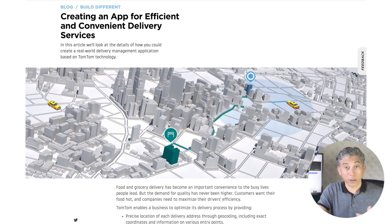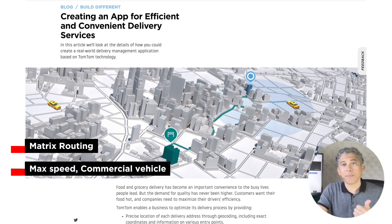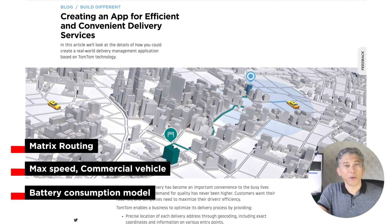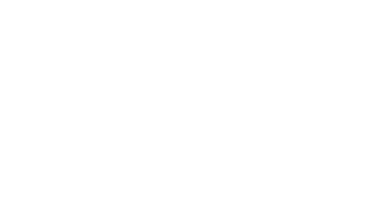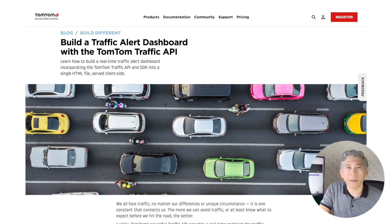Even with all these restrictions, the TomTom Maps APIs can help you. Let's look at this article in our developer portal to get you acquainted with the solution. First, we have to use the Matrix Routing API and then the Routing API with options for max speeds, commercial vehicles, and adding the battery consumption models. With all these parameters set, we are good to go.